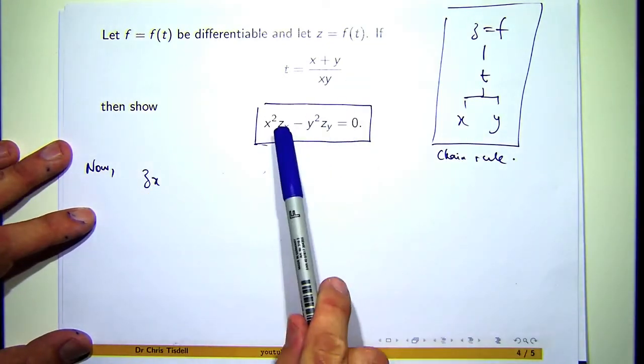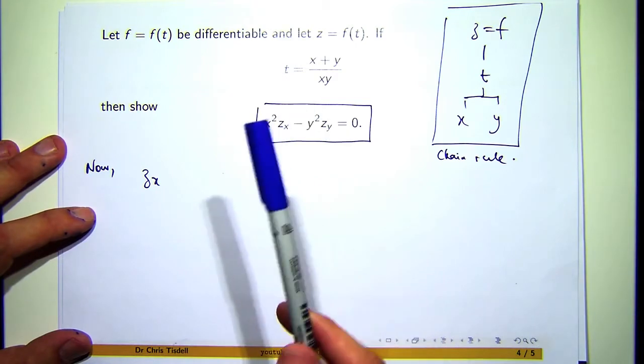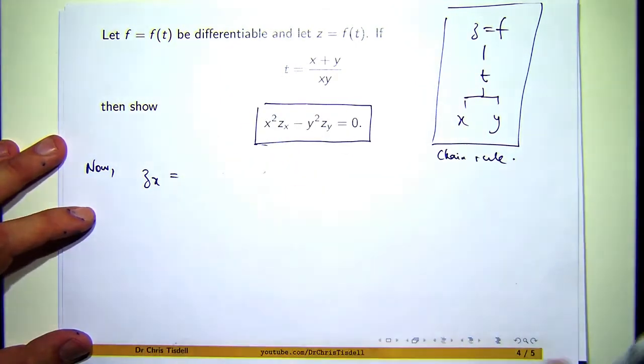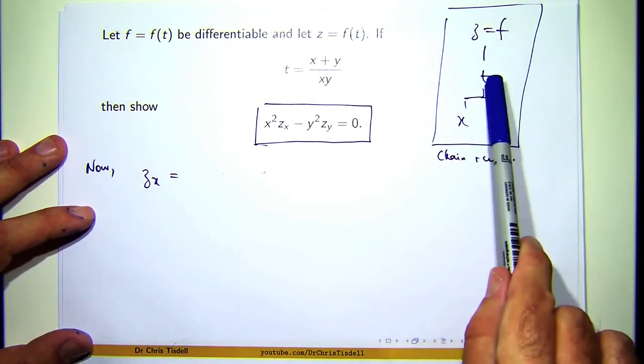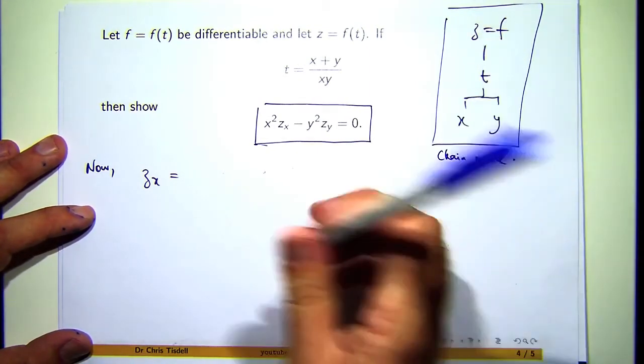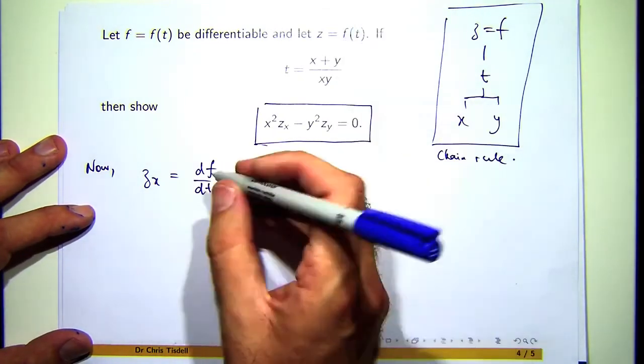So to show this holds, you need to calculate the partial derivatives inside the, say, the left-hand side of the equation. All right, so dz/dx is df/dt times dt/dx. So I've got an ordinary derivative there because f is a function of one variable.